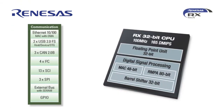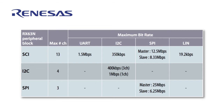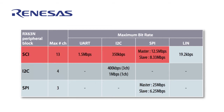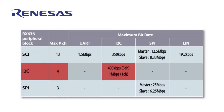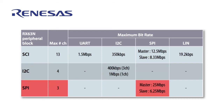The RX-63N has three peripheral blocks which can be configured to support these simpler serial standards. First, let's talk about the Serial Communication Interface, or SCI. The SCI has 13 channels, and all of them can be configured for use as UART, I2C, or SPI, with a maximum bitrate shown here. Furthermore, one of the SCI channels can also be configured for LIN operation. In addition to the SCI, there is an I2C peripheral which has four channels, one of which has a maximum bitrate of 1Mbps, and also an SPI peripheral block with three channels, all of which are capable of 25Mbps in master mode.